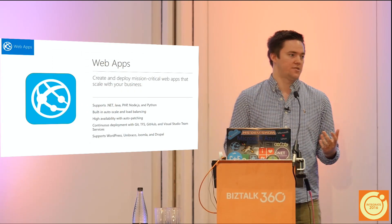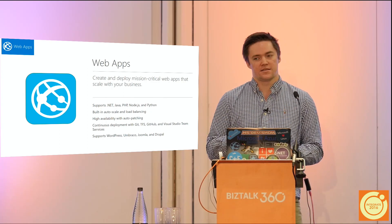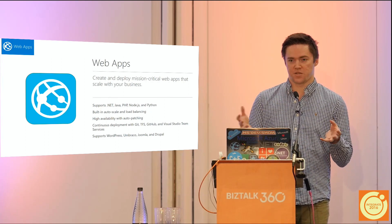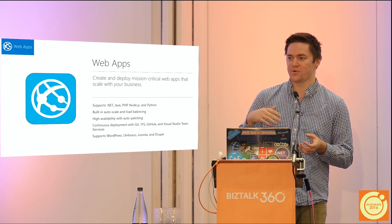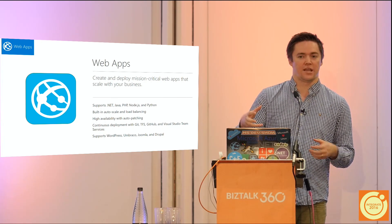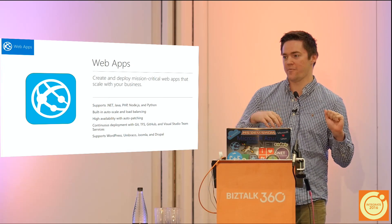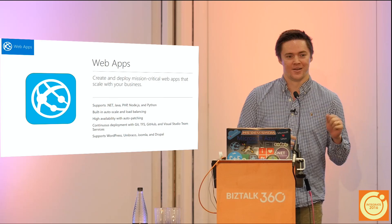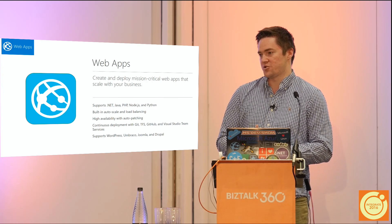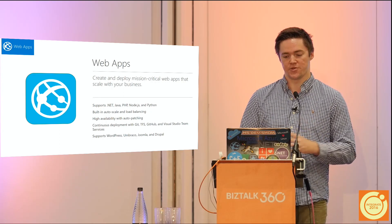Web apps are kind of the baseline service. The interesting thing about App Service is that with the exception of Logic Apps, everything on App Service is basically just a web app with extra flavors added to it. If you deploy a mobile app, it's a web app with push notifications and users turned on. You can turn those on in a regular web application, or turn them off on a mobile app. So I can call it a mobile app inside the portal, but you can also just use a web app for that.